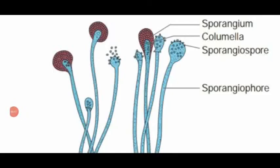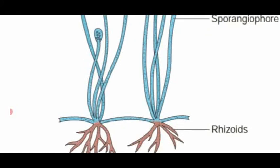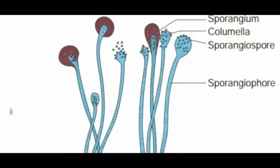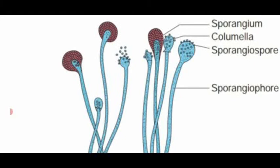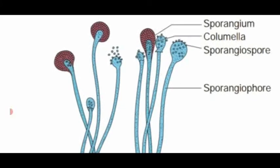In Rhizopus, the horizontal region is called stolon. The stalk-like structure is called sporangiophore. At the tip, the bag-like structure is called sporangium. Inside, the club-shaped sterile region is called columella. Around the columella, sporangiospores are produced. These sporangiospores are liberated due to the destruction of the sporangial wall, fall on a suitable substratum, and develop into a new Rhizopus individual.